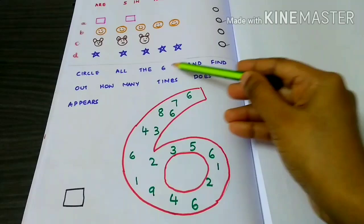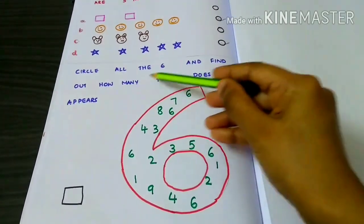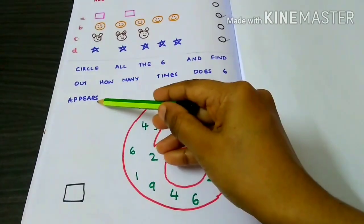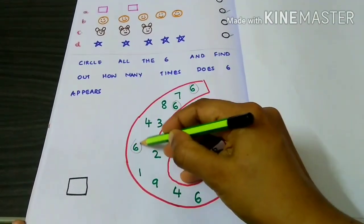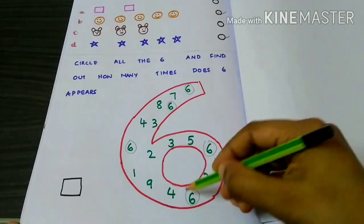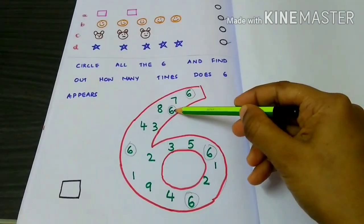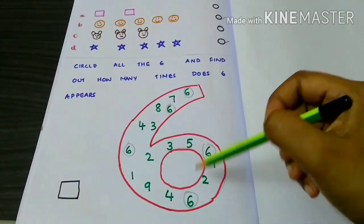Circle all the seeds and find out how many times the seeds appear. 1, 2, 3, 4, 5.